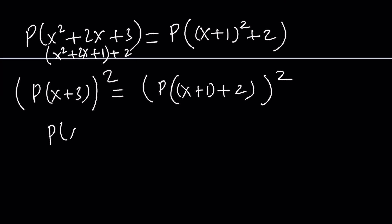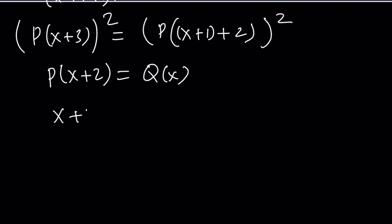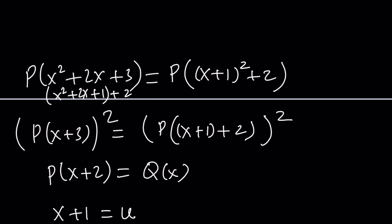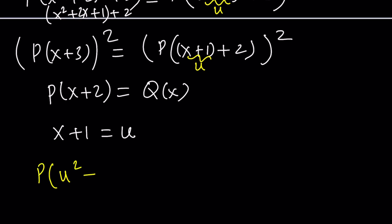First of all, I want to let P(x + 2) equal to Q(x). And why would I pick something like that? The reason behind that is if you evaluate P(x + 2) and replace x with x + 1, then you would be getting something like P(x + 3). Not only that, I'm also going to set x + 1 equal to u. Notice that x + 1 was something that repeated over and over. If you replace x + 1 with u, you get P(u² + 2) equals P(u + 2) squared.